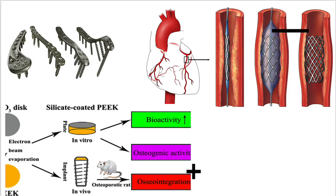The first picture shows stents that were developed and created by materials used in electron beam evaporation. The second picture shows orthopedic implants, which were also developed by materials used in electron beam evaporation.